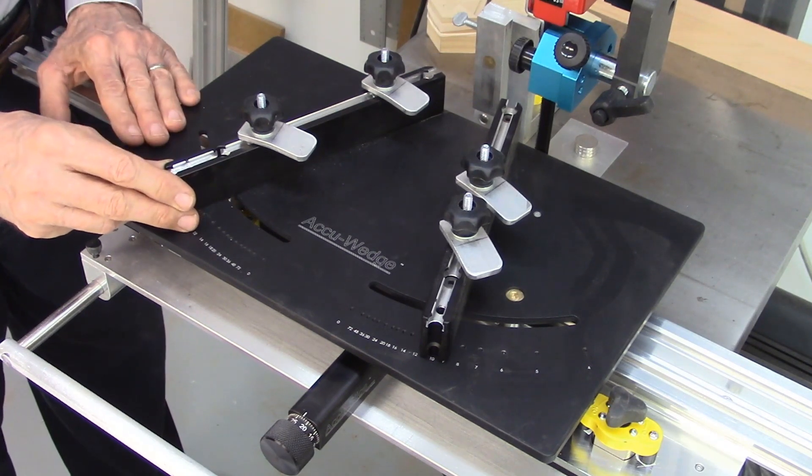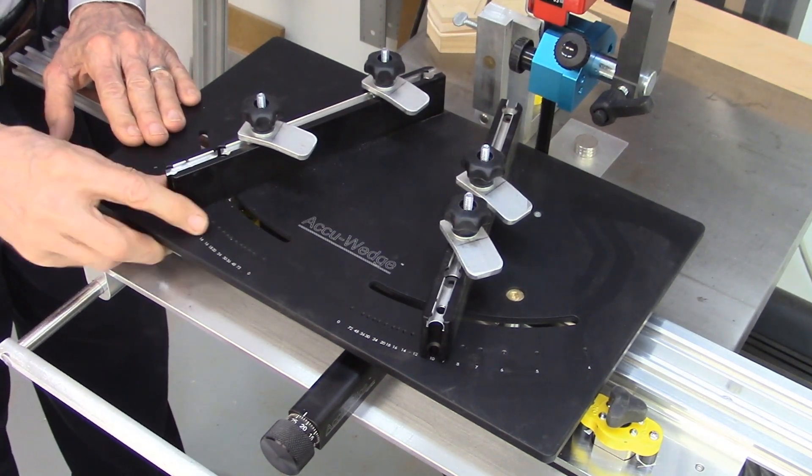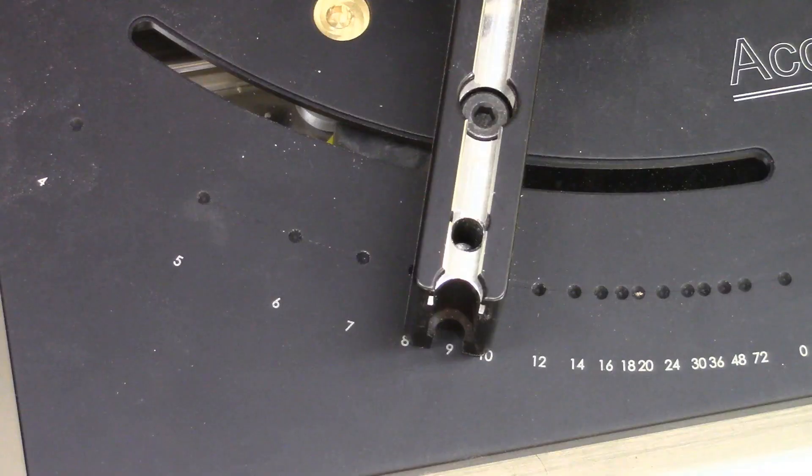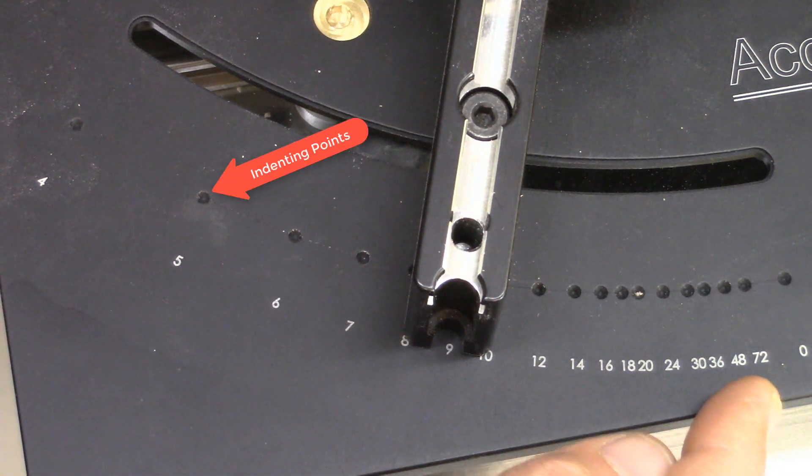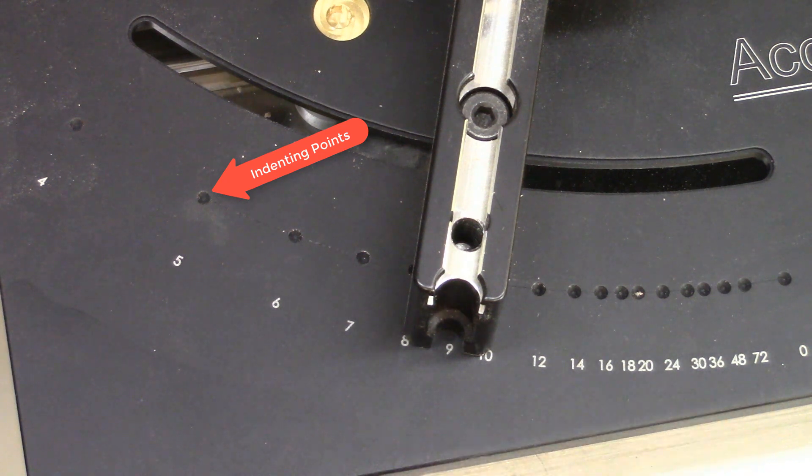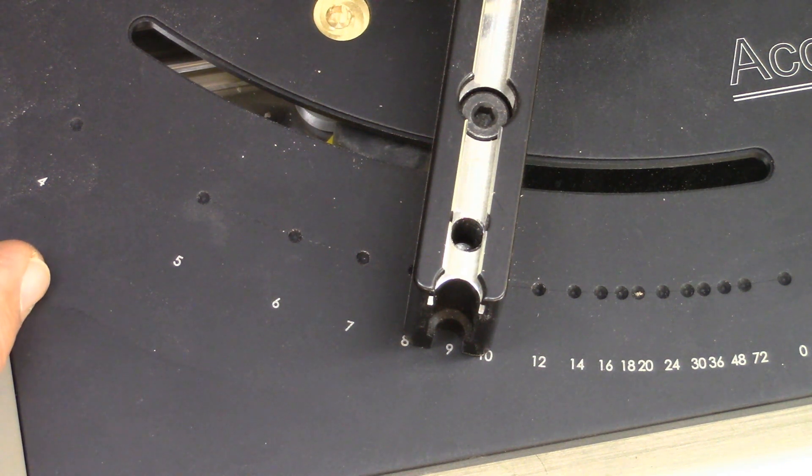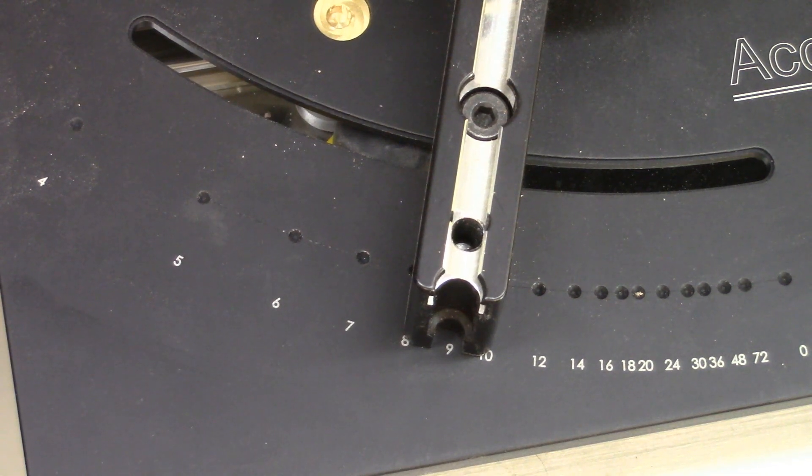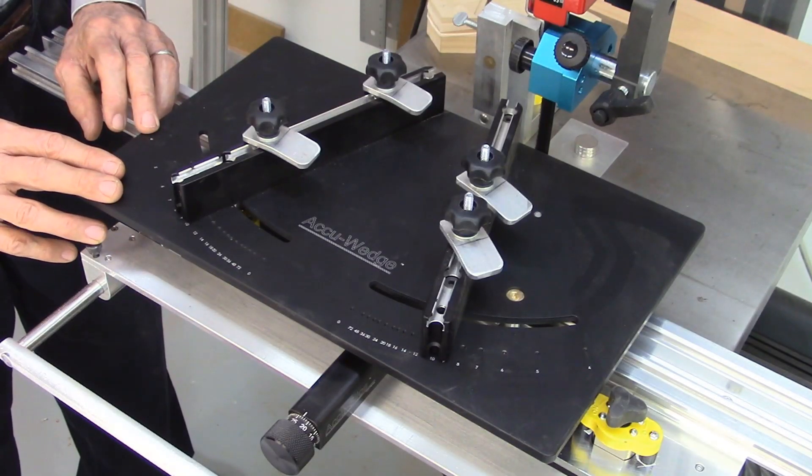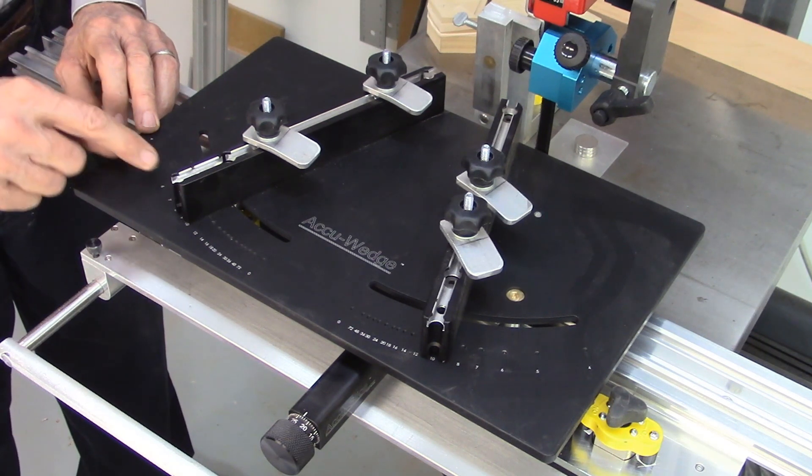The angle for the fences is set with an auto-indexing system that locks the fences in place. The number of segments per ring is labeled on the table from 4 up to 72 segments per ring. These index angles have been precision machined into the AccuEdge table with an accuracy of better than 0.1 degree to enable the production of precise joints with no gaps between the wedges in the segmented rings. There are a total of 17 possible segments per ring selections that have been auto-indexed into the table, including the odd segments 5 and 7.